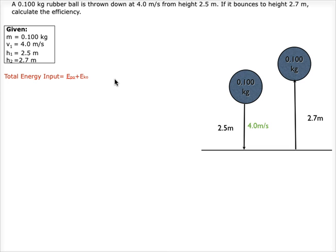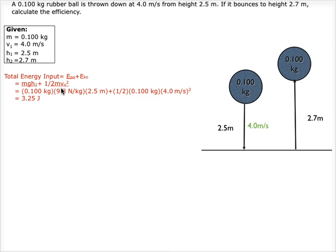We begin by finding the total energy input, which is the sum of potential energy plus kinetic energy. That is the product of mass times gravity times height 1, plus ½ times mass times v₀ squared. So that is 0.100 kilograms times 9.8 newtons per kilogram times 2.5 meters, plus ½ times 0.100 kilograms times 4.0 meters per second squared, which equals 3.25 joules.